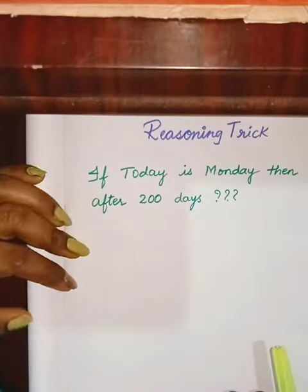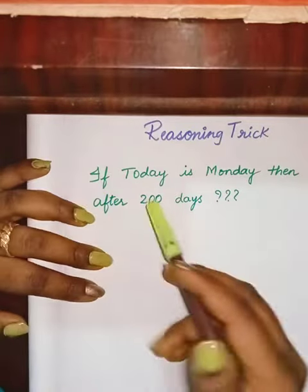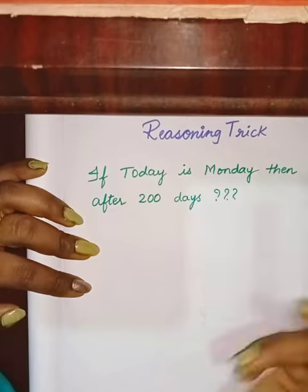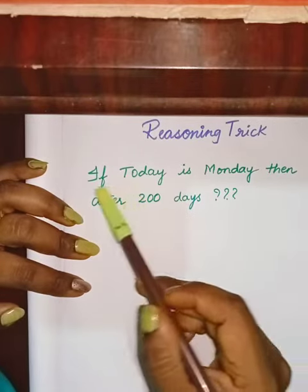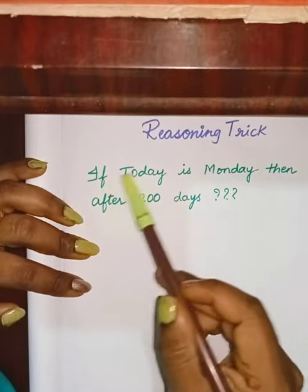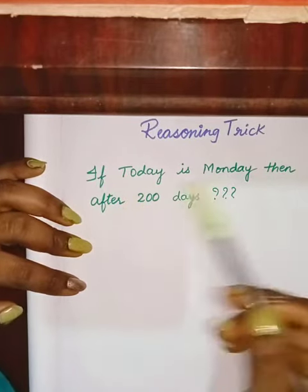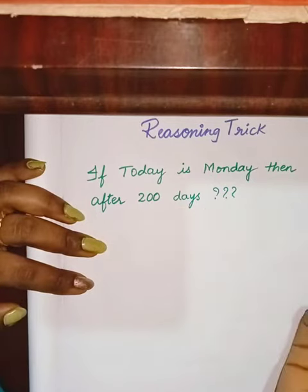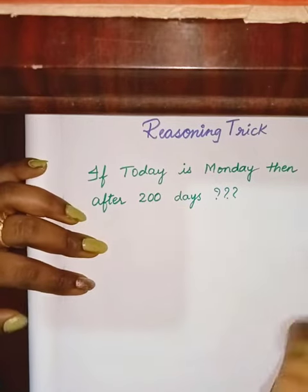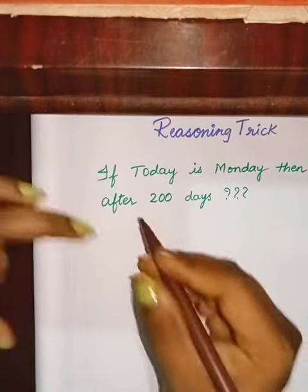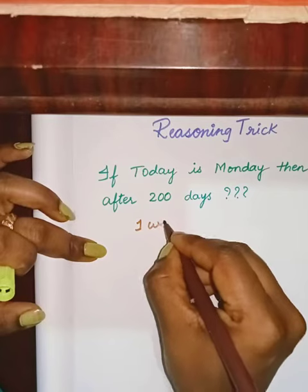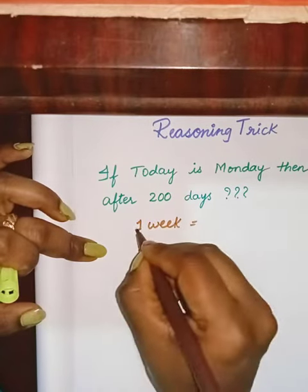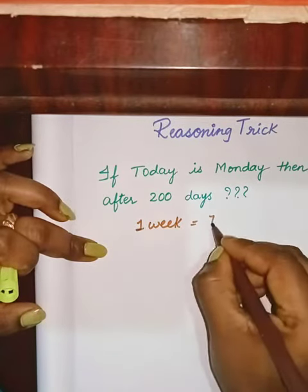Hi, hello everybody! In today's class let us discuss one reasoning trick. Suppose the given question is: if today is Monday, then after 200 days what day would it be? As we all know, one week equals seven days.